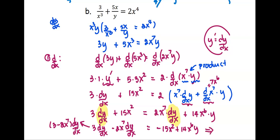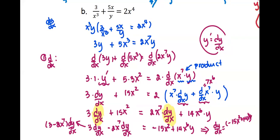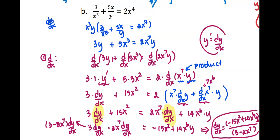That means our dy by dx equals the quantity on the right-hand side — negative 15x squared plus 14x to the sixth times y — all divided by the quantity 3 minus 2x to the seventh. And this is the derivative dy by dx that we're looking for. Thank you.